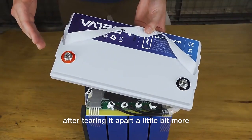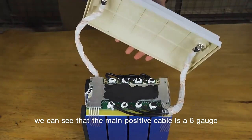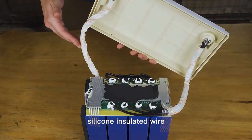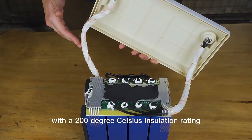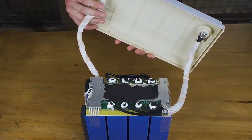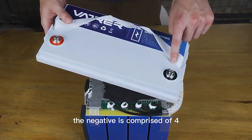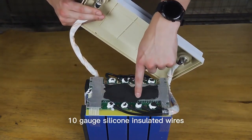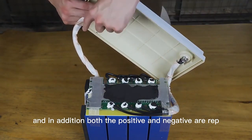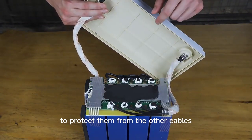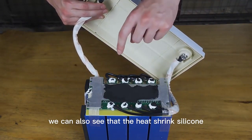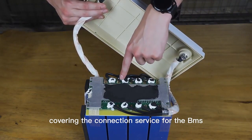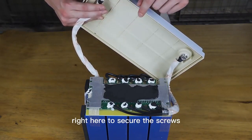After tearing it apart a little bit more, we can see that the main positive cable is a six gauge silicone insulated wire with a 200 degrees Celsius insulation rating, which is pretty standard. The negative is comprised of four 10 gauge silicone insulated wires. And in addition, both the positive and negative are wrapped to protect them from the other cables. We can also see that the heat shrink silicon covering the connection service for the BMS right here to secure the screws.